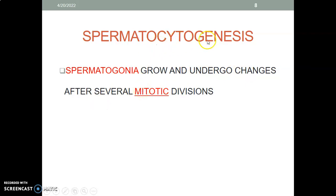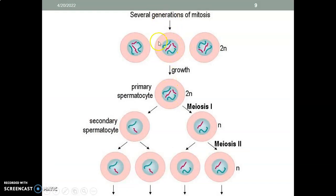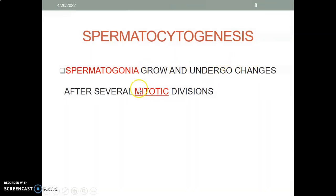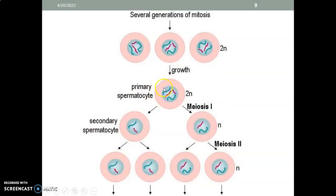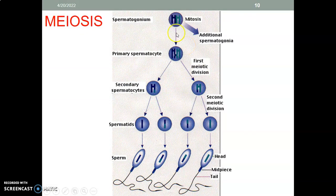What is spermatocytogenesis? It is when spermatogonia undergo changes through several mitotic divisions — that is spermatocytogenesis. So spermatogonia undergo mitosis to form primary spermatocytes. After spermatocytogenesis, meiosis occurs: the first meiotic division gives two secondary spermatocytes, and then the second meiotic division gives two cells from each, meaning one spermatogonium ultimately gives four daughter cells.